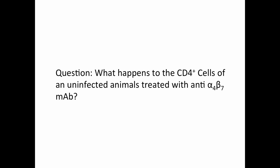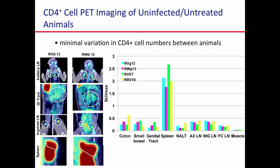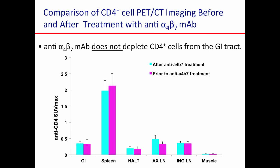What happens to CD4-positive T cells in an uninfected animal treated with anti-alpha 4 beta 7? After all, it's possible that all the effects we're seeing is just that the antibody is removing all the CD4 cells from the gut, and that's why we're not getting transmission — there's no CD4-positive T cells. But I'm going to show you that's not true. We imaged four uninfected animals for CD4 — there's not too much variation across tissues. If we take these four animals and treat them with alpha 4 beta 7, the CD4 signal doesn't change. The treatment with the antibody is not just evacuating CD4-positive T cells from these tissues — it may be changing which CD4 cells are in those tissues, but it's not leading to a gross depletion.